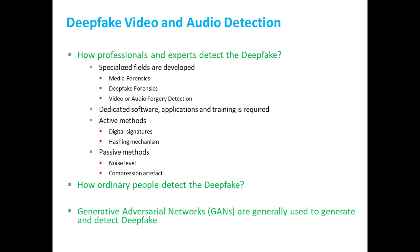Now, when a deepfake video or audio comes to us, how do we detect it? For example, for a politician or popular person, we provide 50 to 100 real videos to a machine learning GAN algorithm. The algorithm learns the features of those real videos. When we then provide the suspected video, the algorithm checks for mismatches in the features. If there are variations or mismatches, it will flag the video as deepfake. This is the overall process of deepfake video generation and detection.